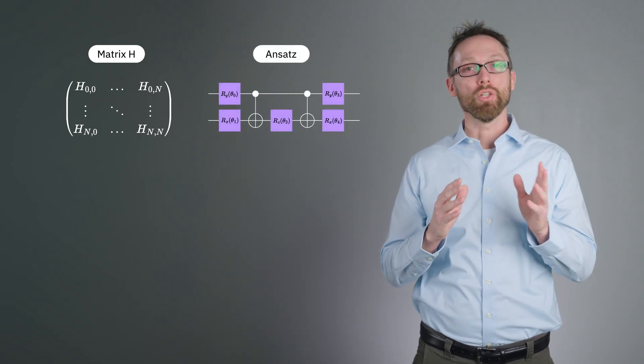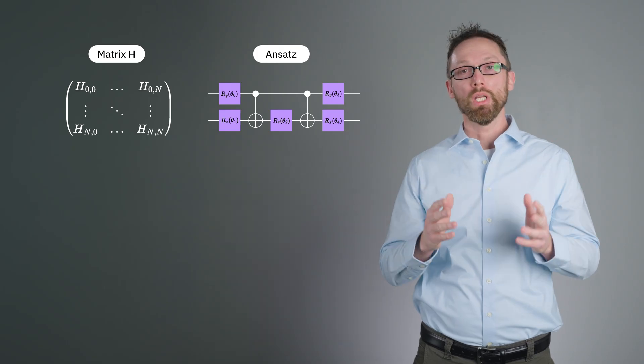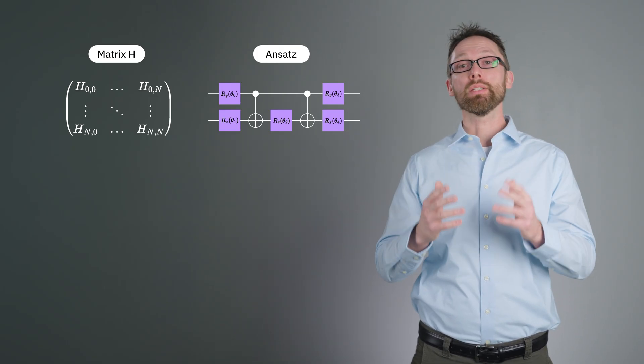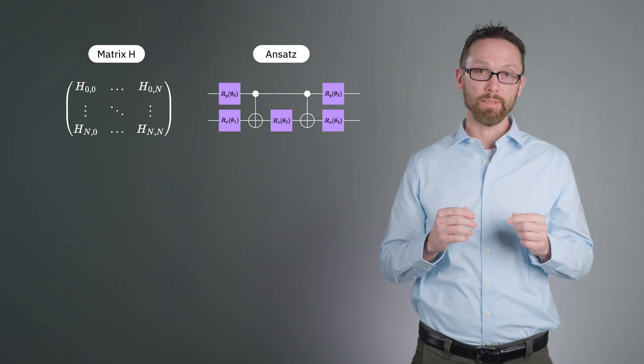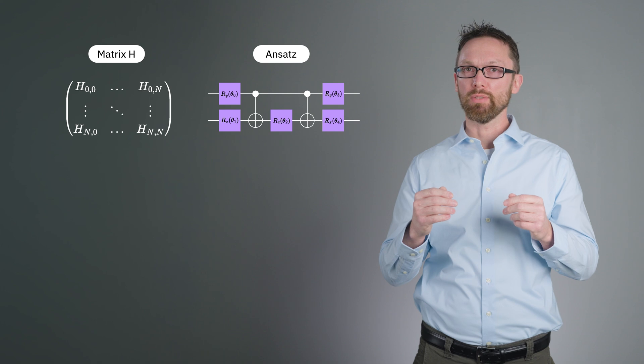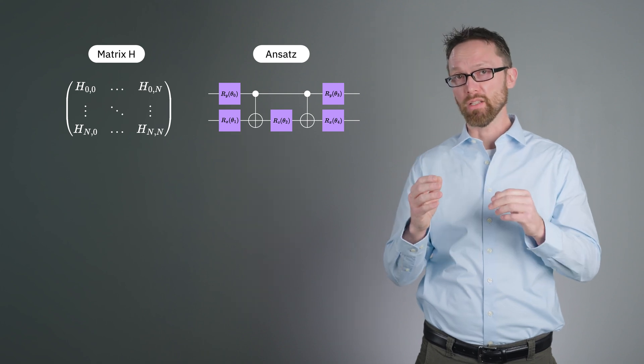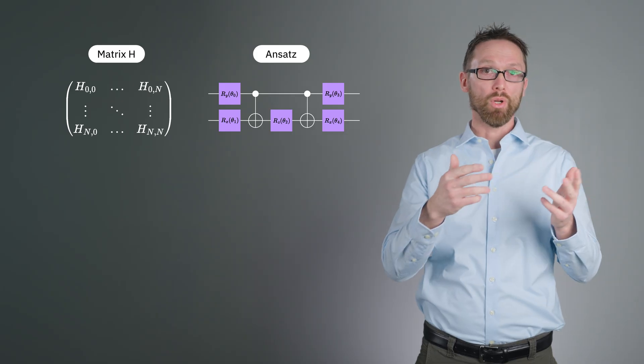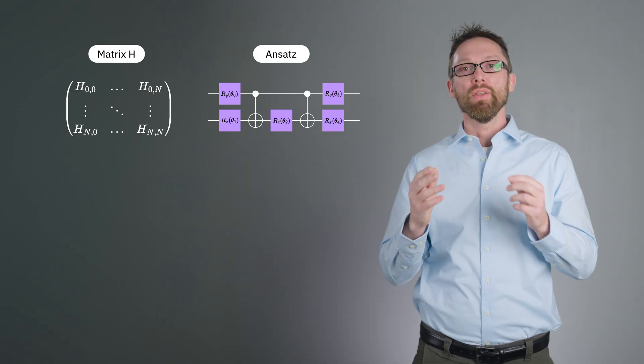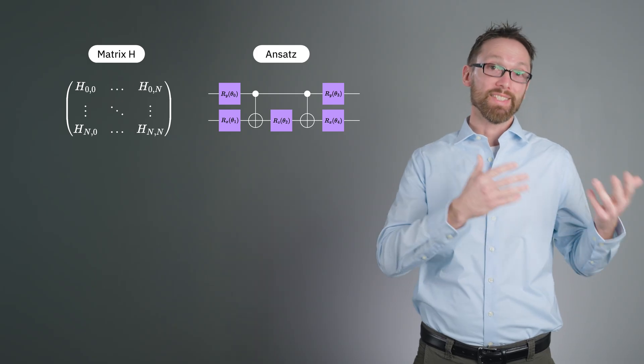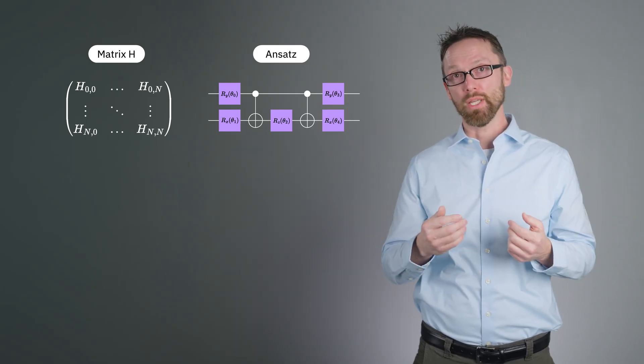Next, there's an Ansatz, a German word meaning approach. This is a quantum circuit that prepares a quantum state approximating the eigenvector you're seeking. Really, the Ansatz is a family of quantum circuits because some of the gates in the Ansatz are parametrized. That is, they are fed a parameter which we can vary. This family of quantum circuits can prepare a family of quantum states approximating the ground state.